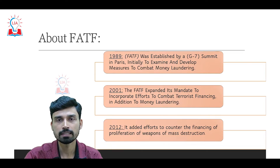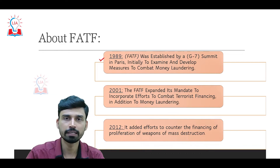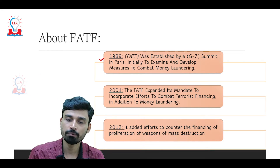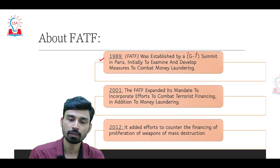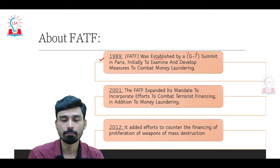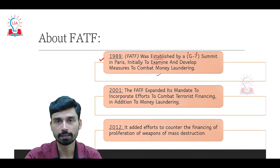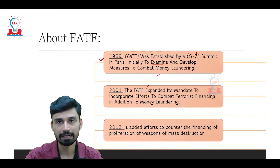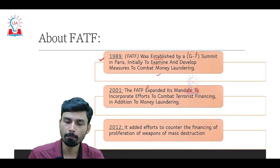Let us try to understand what FATF is. The development of FATF began in 1989 during a meeting between G7 — the Group of Seven member countries — in Paris. They established FATF mainly to examine and develop measures to combat money laundering. The next important development happened in 2001 when FATF expanded its mandate to also include and incorporate efforts to combat terrorism financing, in addition to money laundering.